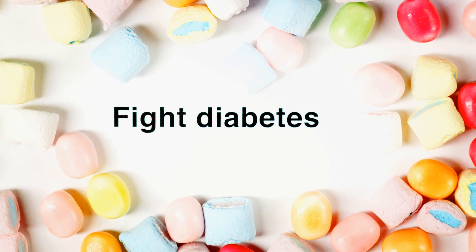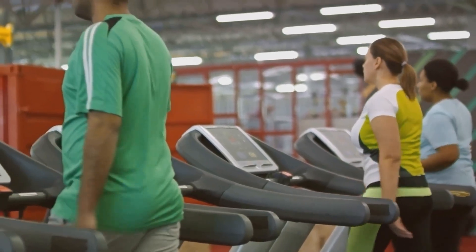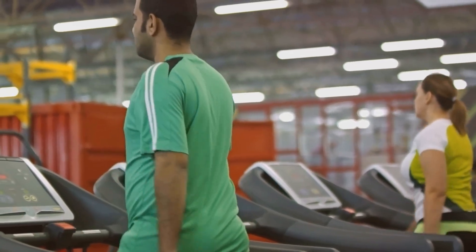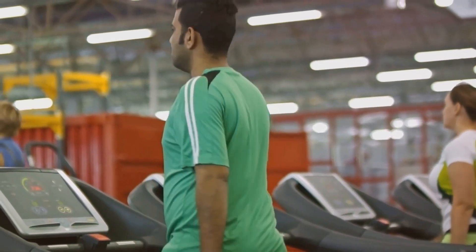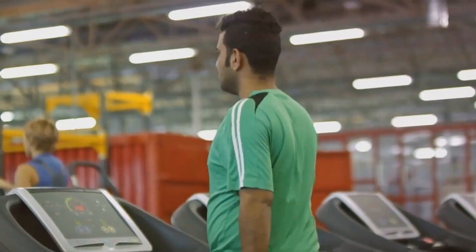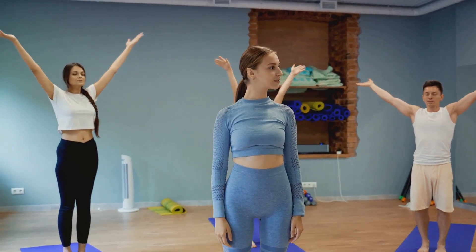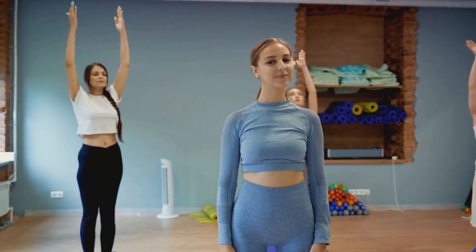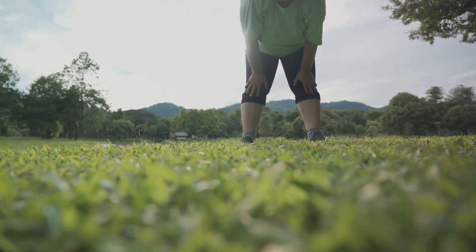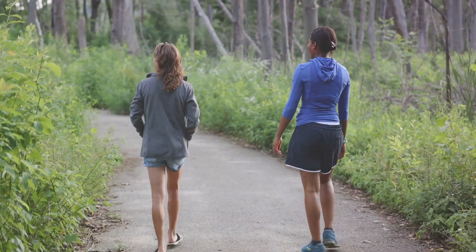But it's not all doom and gloom. There are proactive steps we can take to manage and even prevent the negative impacts of insulin resistance on our beta cells. Regular physical activity, a balanced low-glycemic diet, weight management, intermittent fasting, and stress management can all play a part in improving insulin sensitivity and preserving beta cell function.